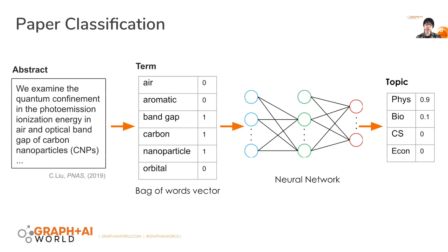Here is how this can be done using a regular neural network. From the paper content, we can extract a feature vector — in this case, we can use a bag-of-words approach, where each entry represents the appearance frequency of words in this paper. After that, we fit this feature vector into our neural network, which will output the probability distribution of the class of this paper. In this case, physics has the highest probability, so we say this is a physics paper.